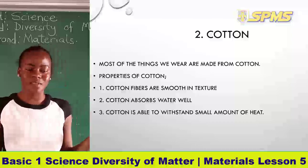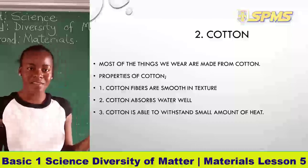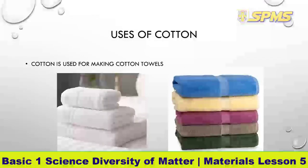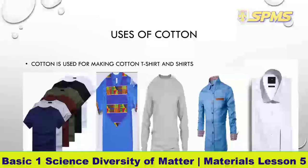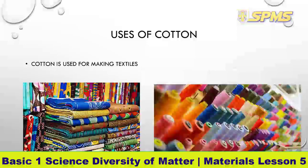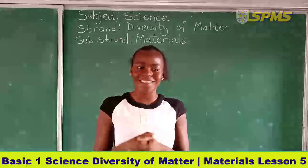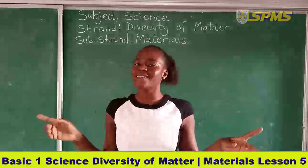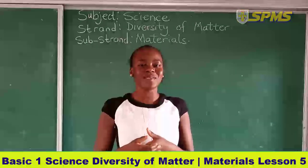Cotton is used for making textiles — the fabrics, threads, and the rest are made from cotton. Bed sheets, duvet covers, and bed spreads are also made from cotton. Isn't that interesting? Let's move on to our last material, which is rubber.